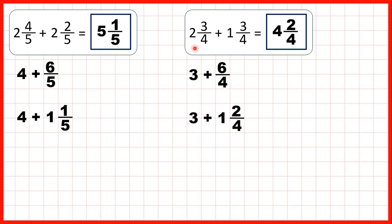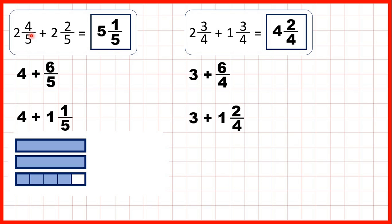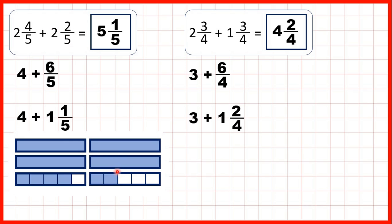So why is it that the whole numbers in our question were 2 and 1, but the whole number in our answer was 4? Well, that's because we made another whole number by changing the improper fraction into a mixed number. We can see that more clearly if we show the fraction bars. So first we had 2 and 4 fifths — 2 wholes and 4 fifths of another fraction bar — and we were adding 2 and 2 fifths. When we added the fractions together we got 6 fifths, but we had to change that back into a mixed number, so that's 1 whole and 1 fifth. When you add 1 and 1 fifth to the 4 wholes, that gives us our answer 5 and 1 fifth, and you can see that on our fraction bars we now have 5 wholes and 1 fifth.